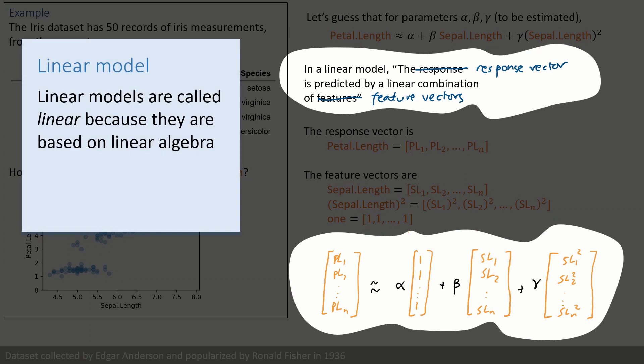The thing to remember here is linear means vectors. When we write out a linear model, we're interested in vector equations, and the maths of vector equations is called linear algebra, and that's why these models are called linear models.